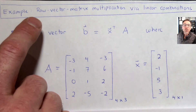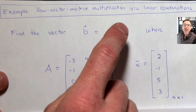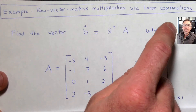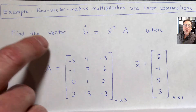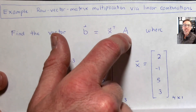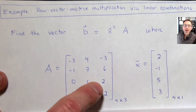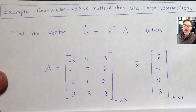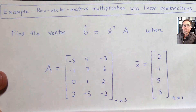Let's do an example where we leverage our definition of row vector-matrix multiplication via linear combinations to actually calculate an output of this operation. Specifically, let's find the vector b that is equal to x-transpose times A, where A is a 4 by 3 matrix given with these integer coefficients, and x is a 4 by 1 column vector given with these integer coefficients.